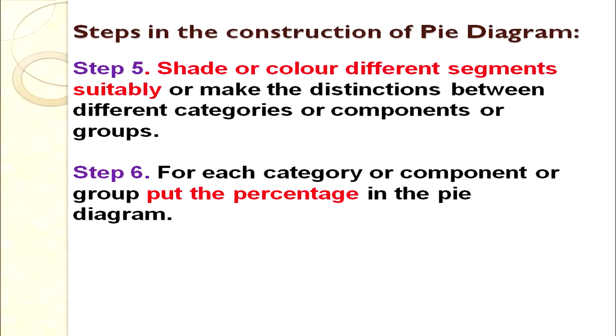In Step 6, put the percentage labels on the shaded areas, and a neat, clean, and interesting pie diagram will be drawn. These are the 6 steps to follow when drawing a pie diagram. Let's check whether we have learnt properly by taking an example.